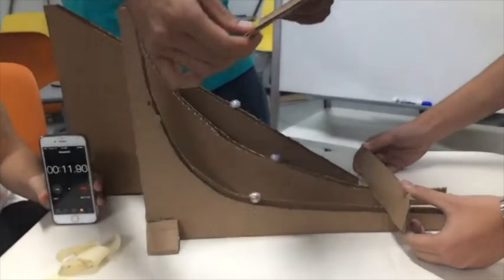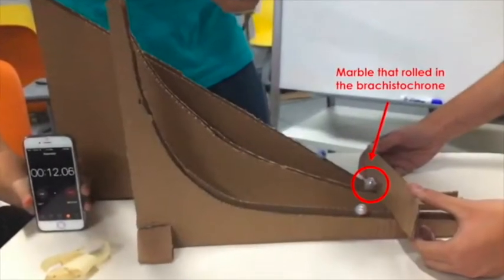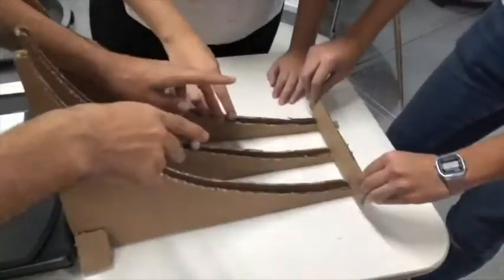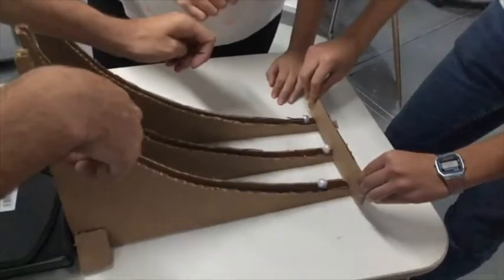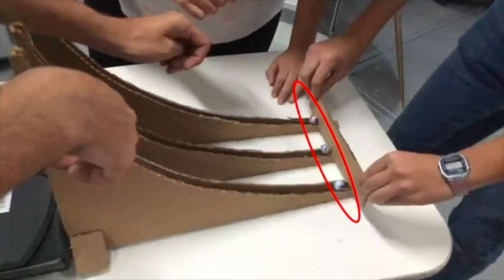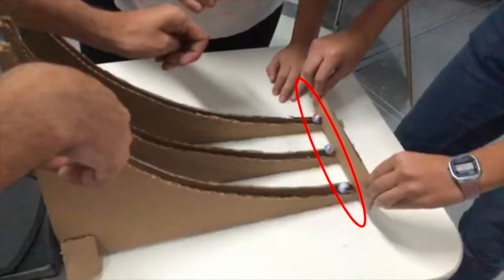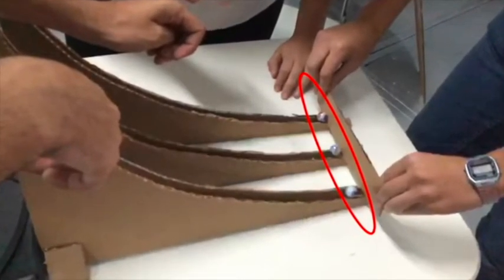As we previously researched, the marble that rolled in the Brachistochrone took the least amount of time, and when letting the marbles roll in different starting points inside the Brachistochrone, they all finished at the same time. With the help of slow motion camera, we were able to get more precise results.